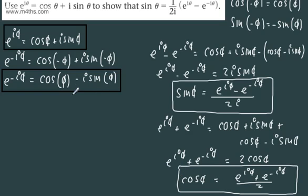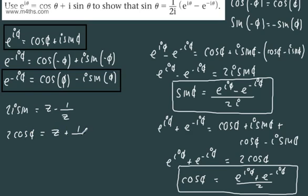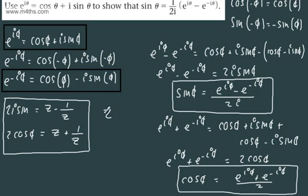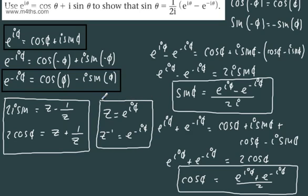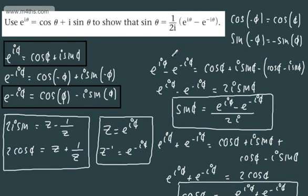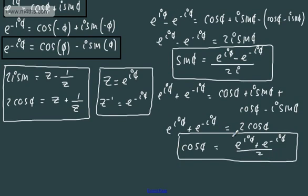So there we go — we've gone a bit beyond the question. Going back to this point, we can also write 2i sine theta equal to z minus 1 over z, and we will come to this later in our course. We can write 2 cos theta equals z plus 1 over z. Remember, we can express z as equal to e to the i theta, so 1 over z gives us z to the negative 1, which is e to the negative i theta. This will become quite an important result later on. For now, if you can understand the odd and even functions, you can do it with both cosine and sine.